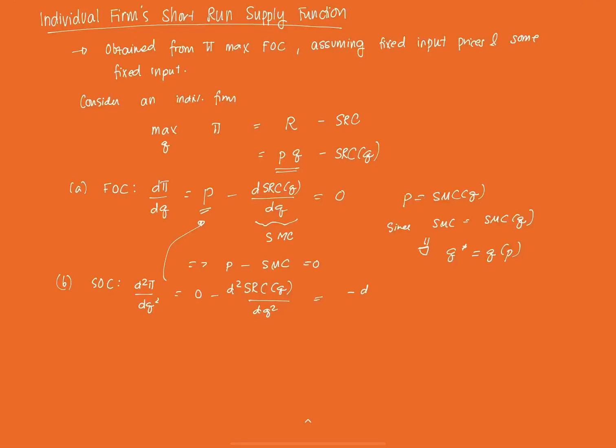Which is equal to negative d SMC over dQ. And note, this is negative, therefore, an SOC is satisfied in this case, supposedly, assuming we plug in values that can satisfy that. And if we just take out the negative sign, we can conclude that this derivative, if we derive SMC with respect to Q, it should be greater than zero.